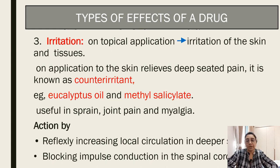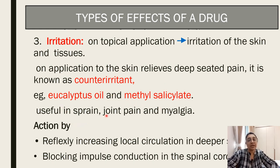Irritation — application of the drug causes irritation on the skin and tissue, which relieves deep-seated pain. This is called counter-irritation. Drugs such as eucalyptus oil and methyl salicylate relieve deep-seated pain like sprain, joint pain, and myalgia, by reflectively increasing local circulation in deeper structures and blocking impulse conduction in the spinal cord.